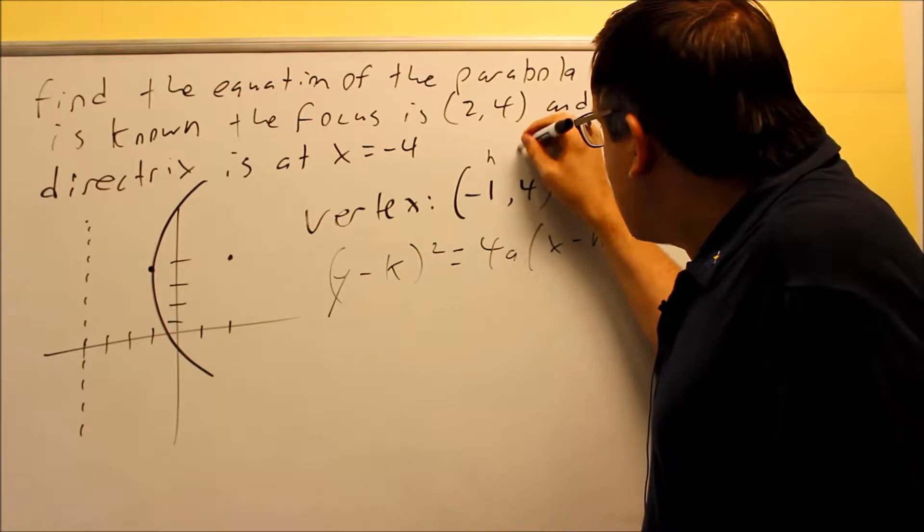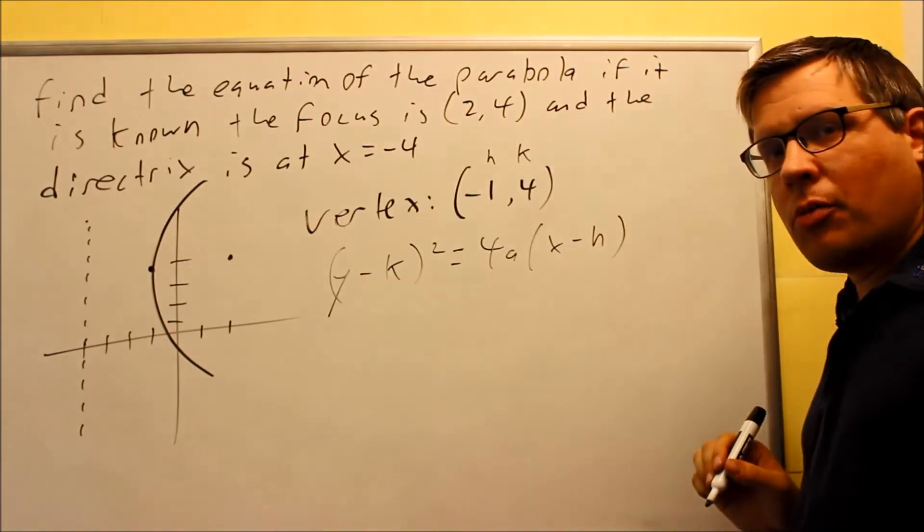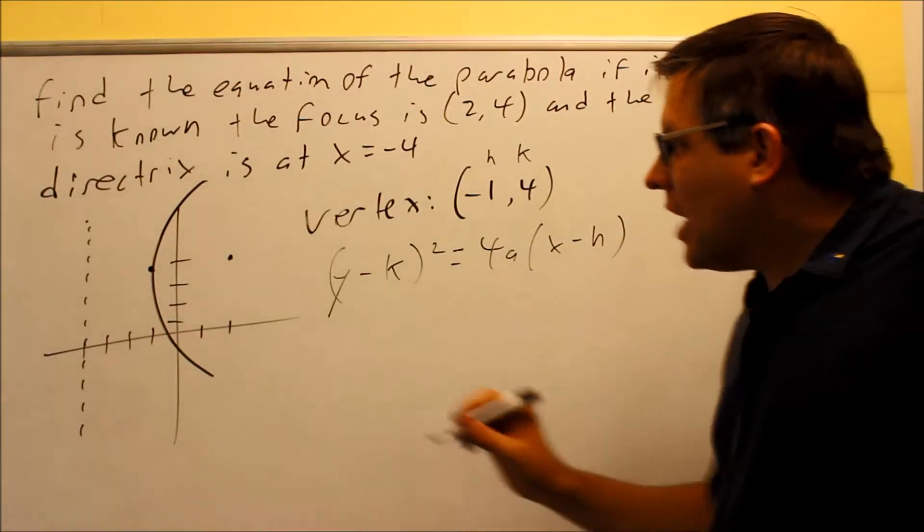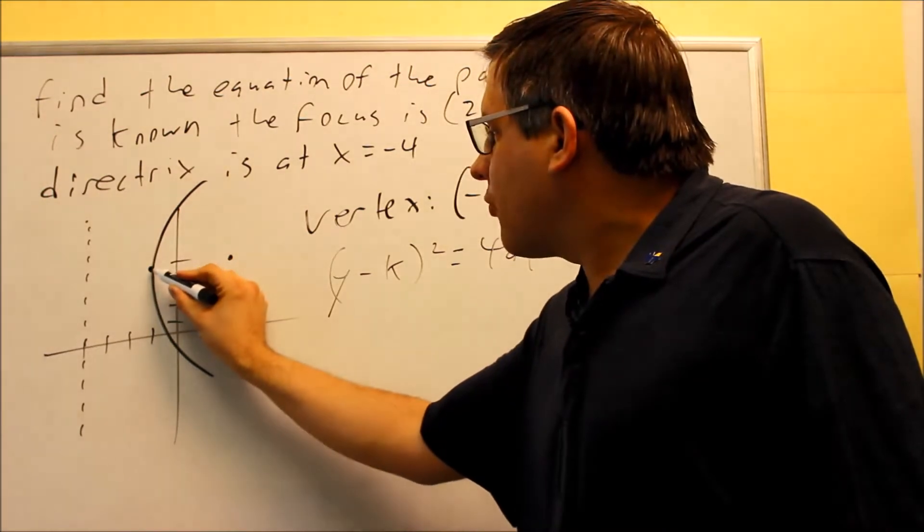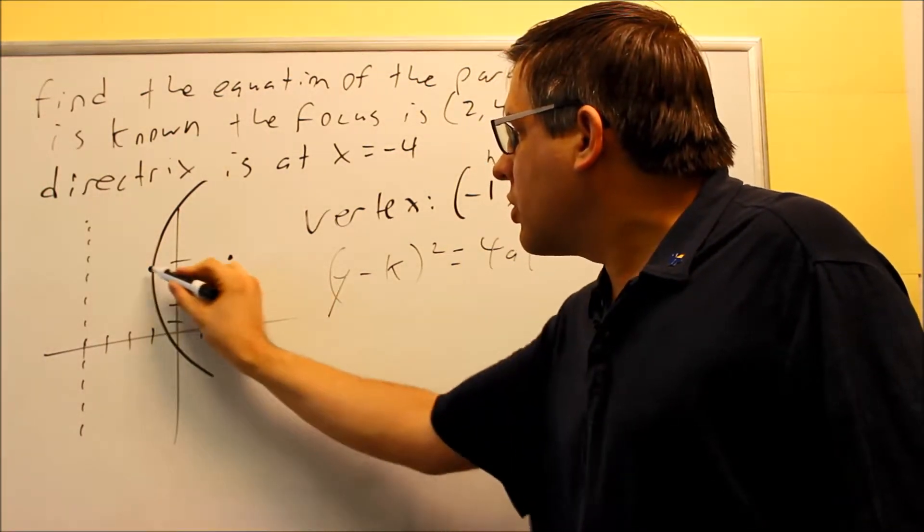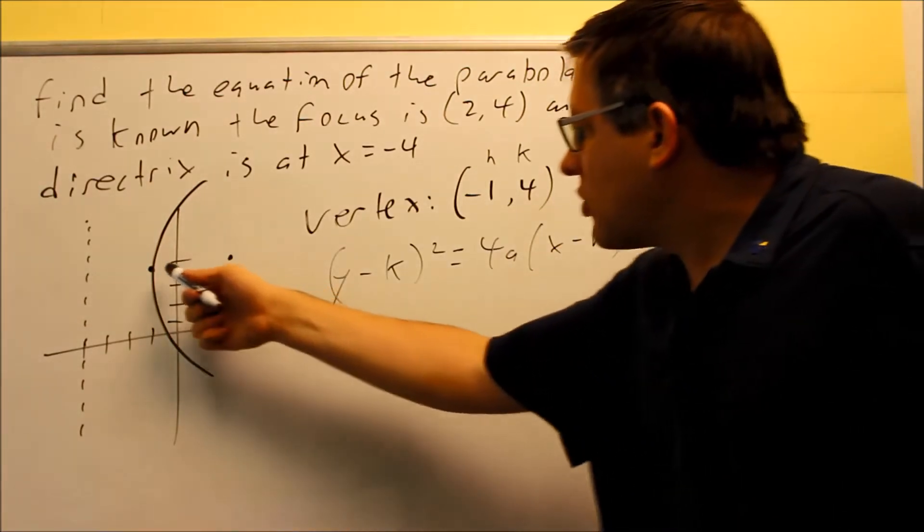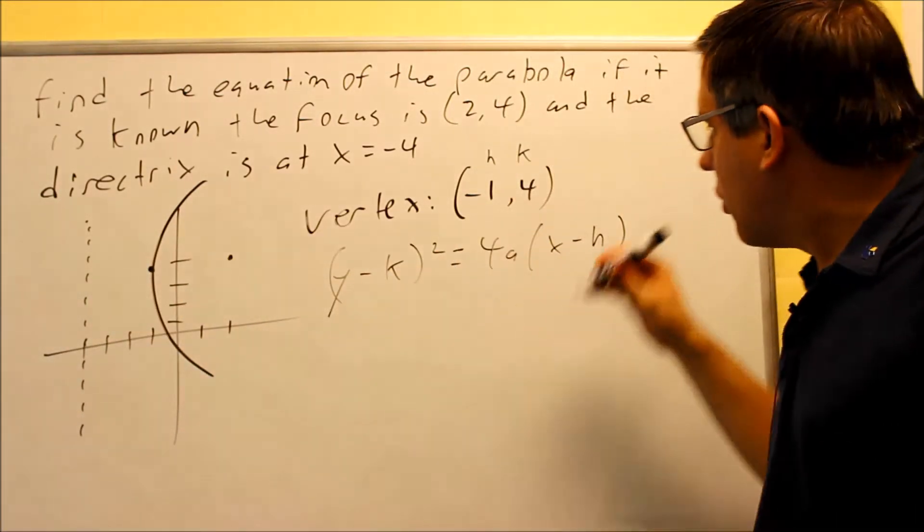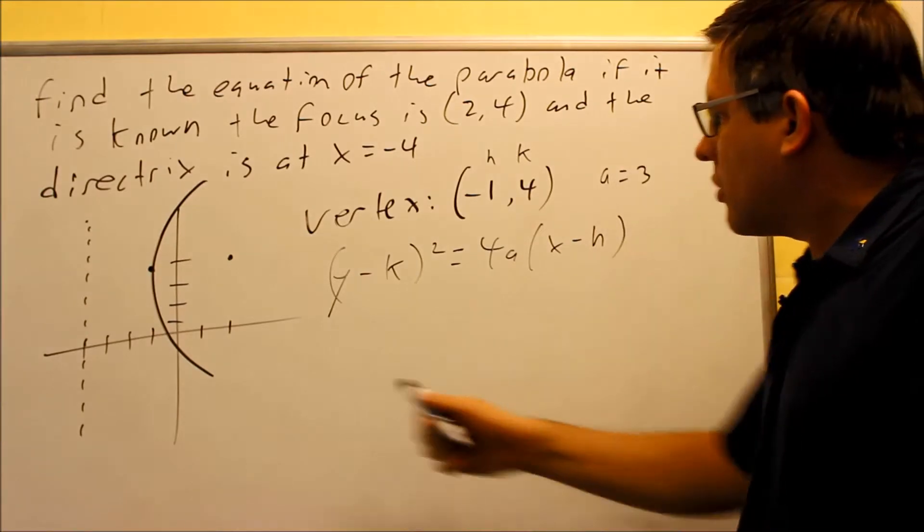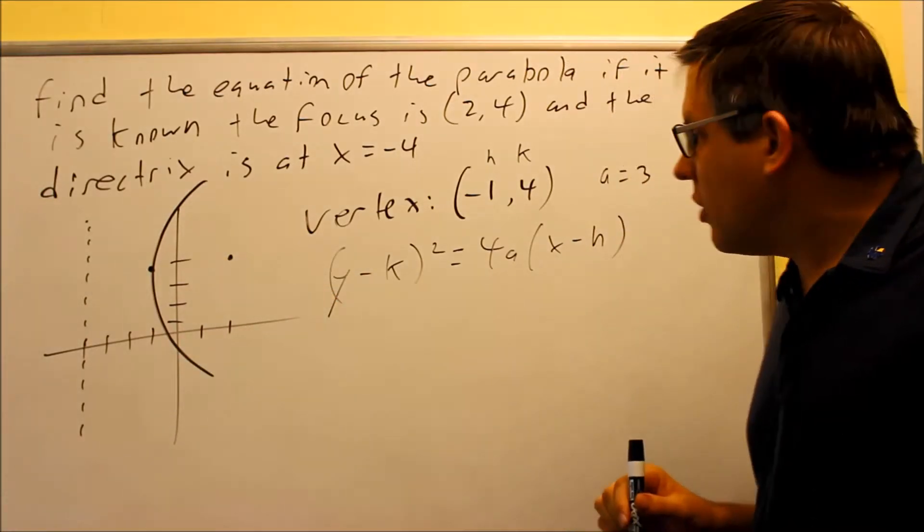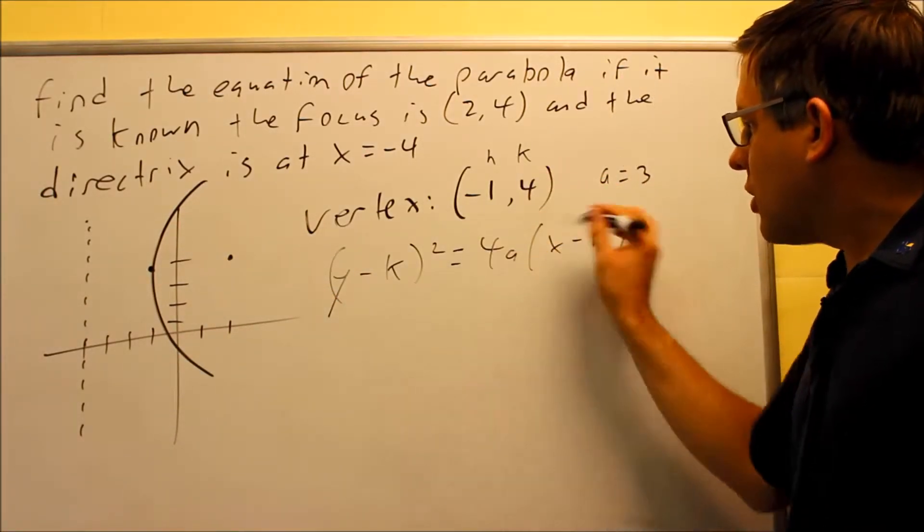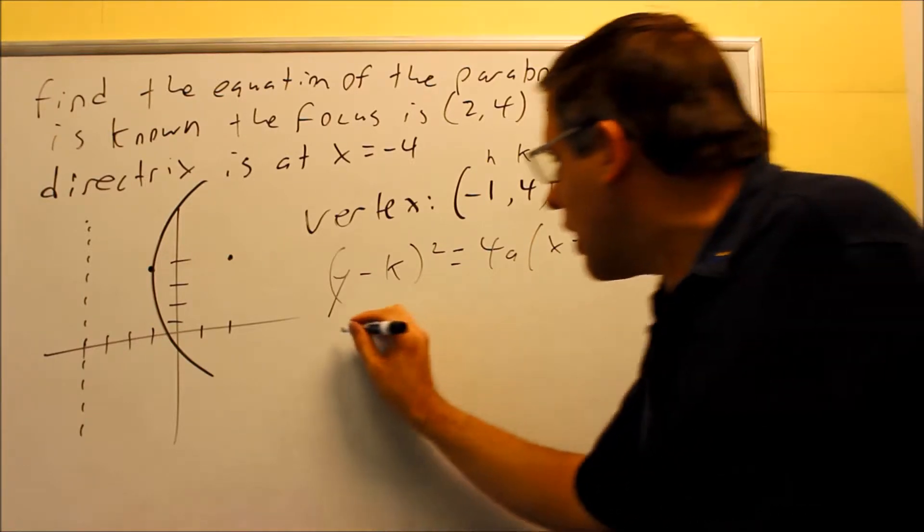Now I already know my h and k because that comes directly from my vertex. Now my a value is going to be the distance from your vertex to the focus. That distance right there, that's going to be 3. In fact, it's also 3 going from this back to the directrix. So either or, we know that the a value taken directly from the picture, that's going to be 3. Now we can put all this information into the formula here and get the answer.